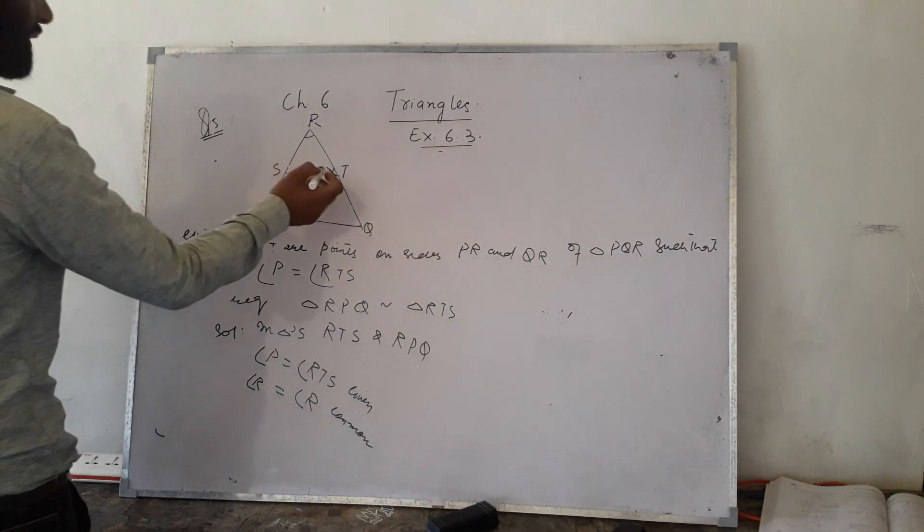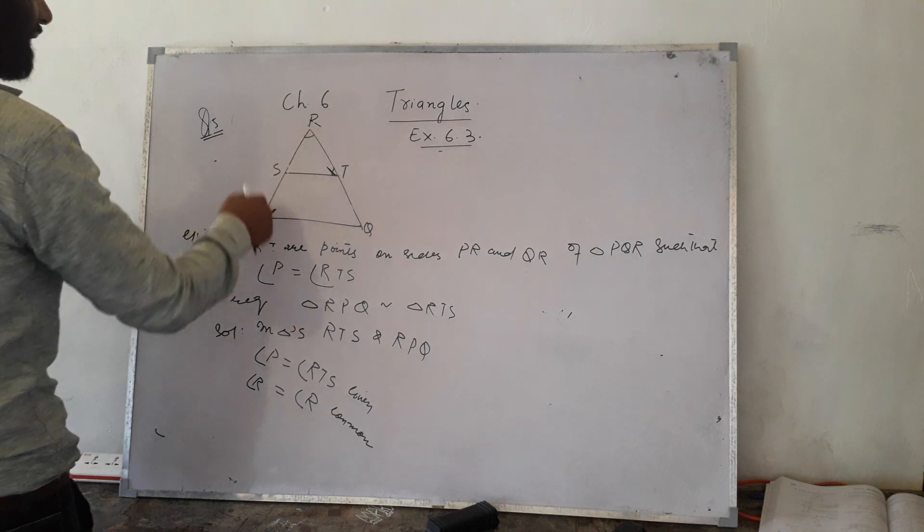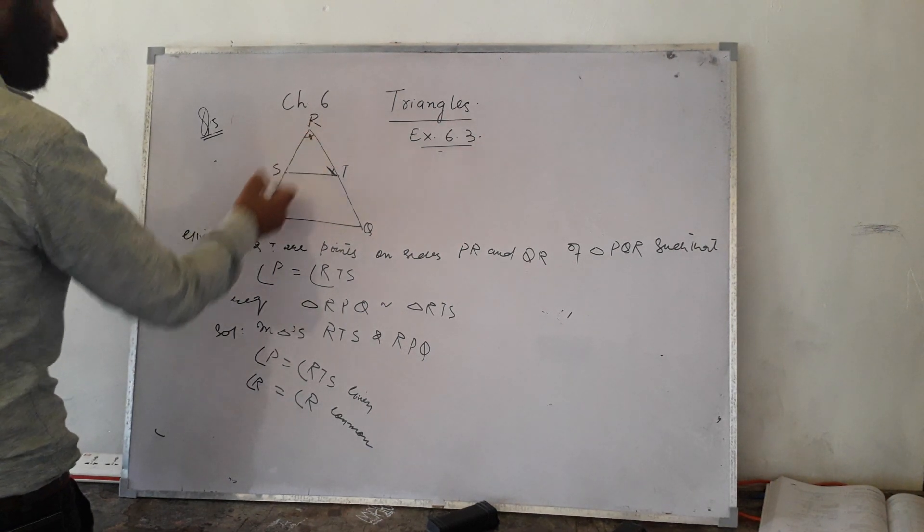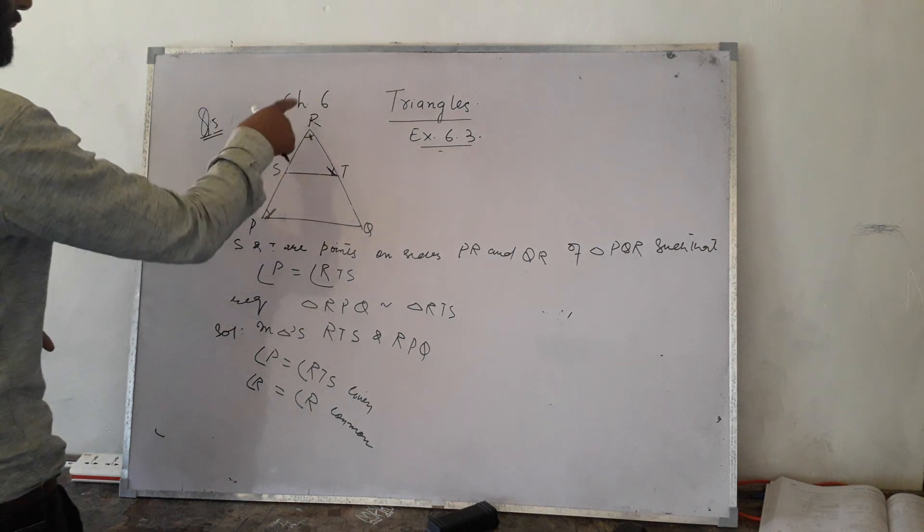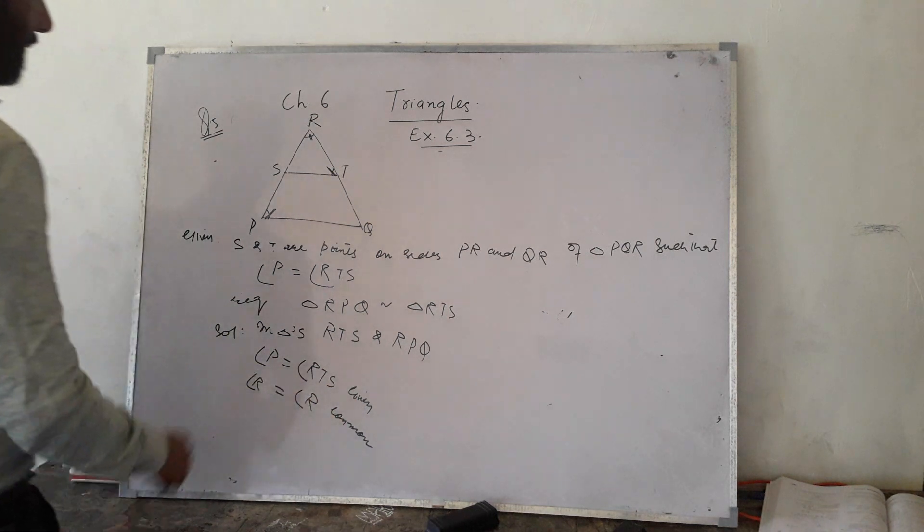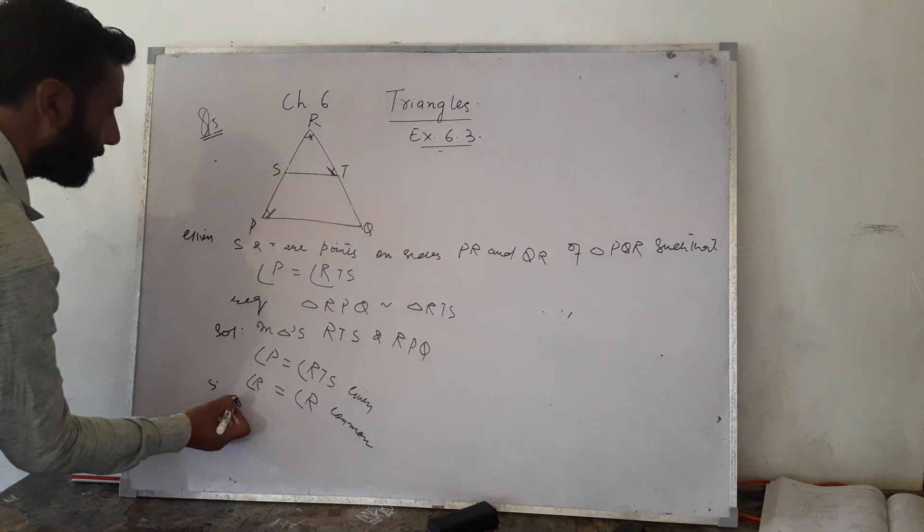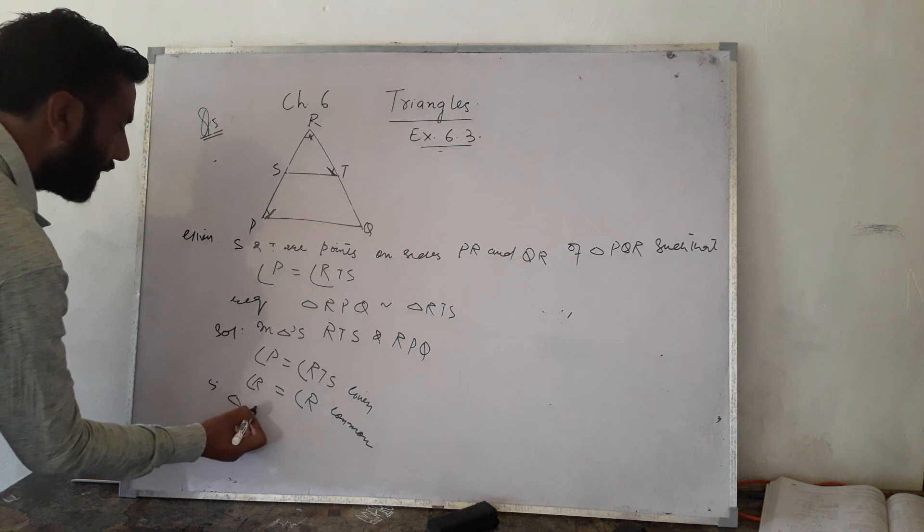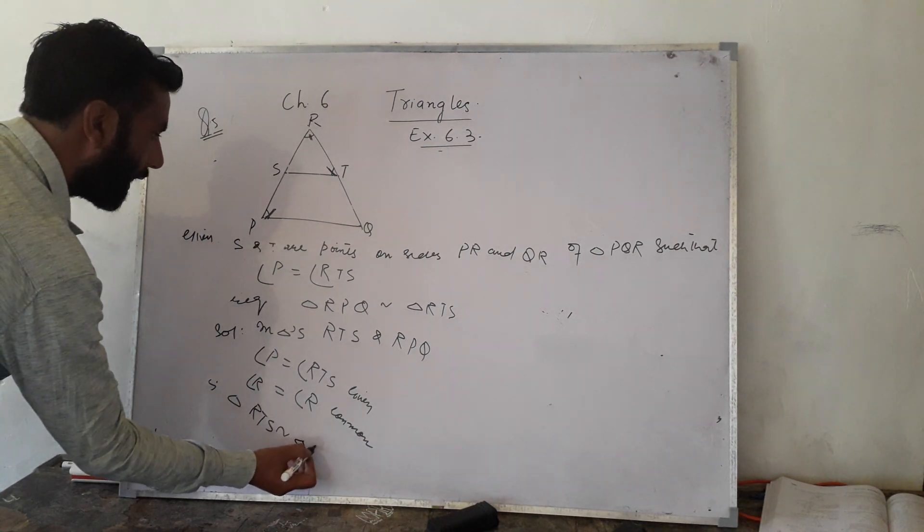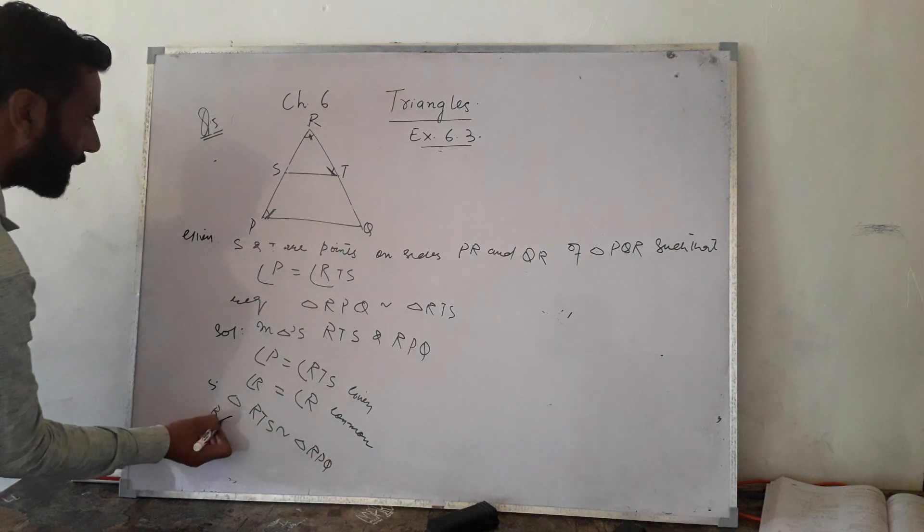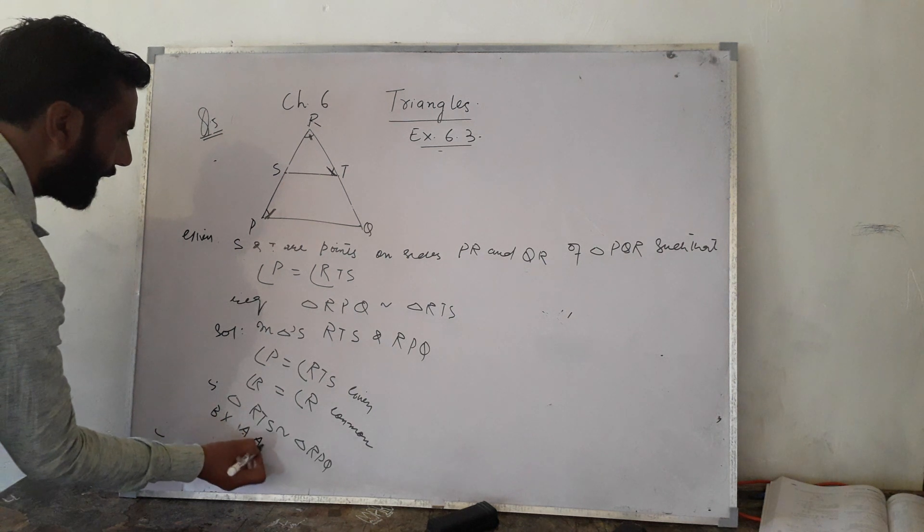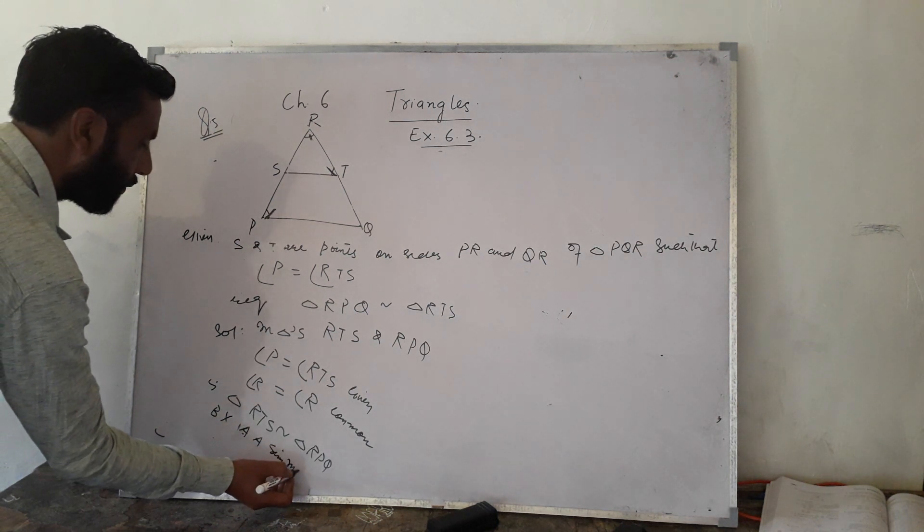In triangle RTS, the opposite side is PS. Triangle RTS is similar to triangle RPQ by the angle-angle similarity rule.